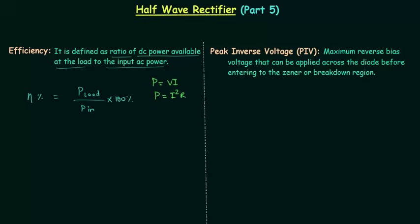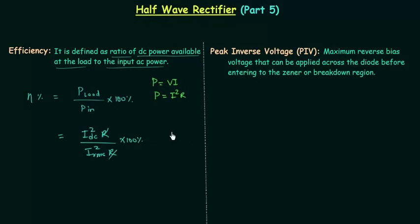We can write P load as IDC squared multiplied by R, where R is the load resistance, divided by P in, which is equal to IRMS squared multiplied by R, where R is the load resistance. This R and this R will cancel out. IDC is equal to Im, the peak value of current, divided by pi, and IRMS is equal to Im divided by 2.